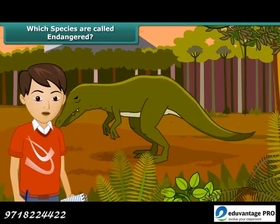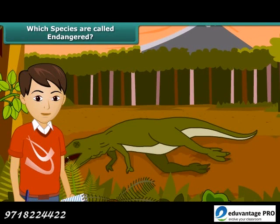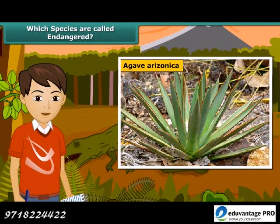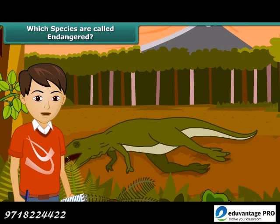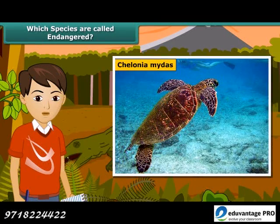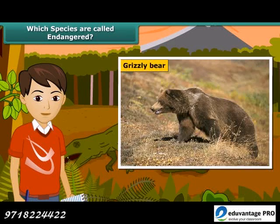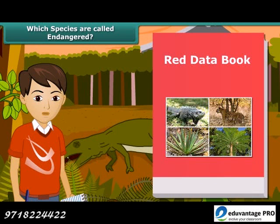You must have heard about dinosaurs — they existed hundreds of years ago but are now extinct. Many animals and plants have become extinct, whereas some are on the verge of extinction. Species whose numbers are diminishing to a level that they might face extinction are known as endangered species. The Red Data Book is the source book which keeps a record of all the endangered animals and plants.